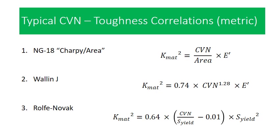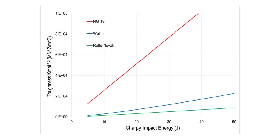A lot of you will know the Charpy over area correlation as the 12 Charpy over area correlation — that's simply an inches-to-foot correction factor. So let's take a look at how these plot up. We've got three lines: the NG18 Charpy over area shown in red, the Wallin-J shown in blue, and the Rolf-Novak shown in green. And we can play a game of 'one of these things is not like the other.' The Charpy over area correlation is about ten times higher than the other two, which seems a little wonky.